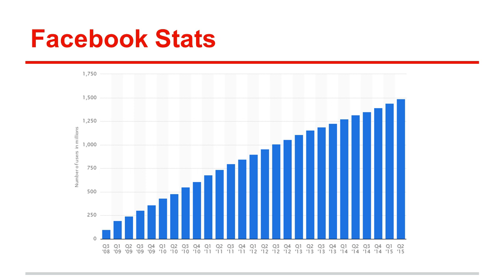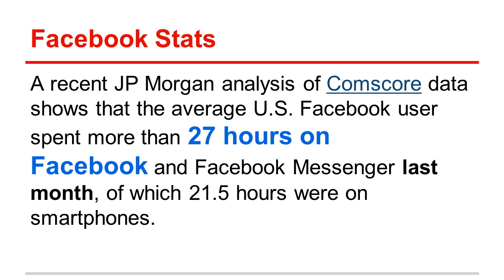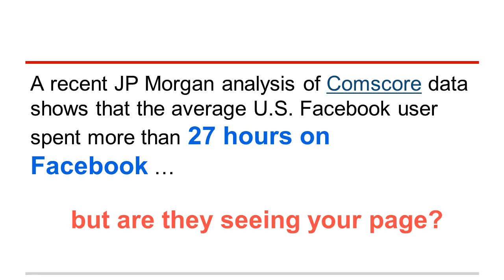How much time are people spending on Facebook? This is from August 2015 — a recent analysis showing that the average user spends almost an hour a day on Facebook, and a lot of those hours are on our smartphones. We know people are spending time here, but are they seeing your library's Facebook page? Not necessarily. Facebook uses EdgeRank, an algorithm that determines what posts people see and where they show up in our feeds. If you have 300, 400, 500 friends and follow 50 pages, you can't see everything, so Facebook uses EdgeRank to determine what we see.